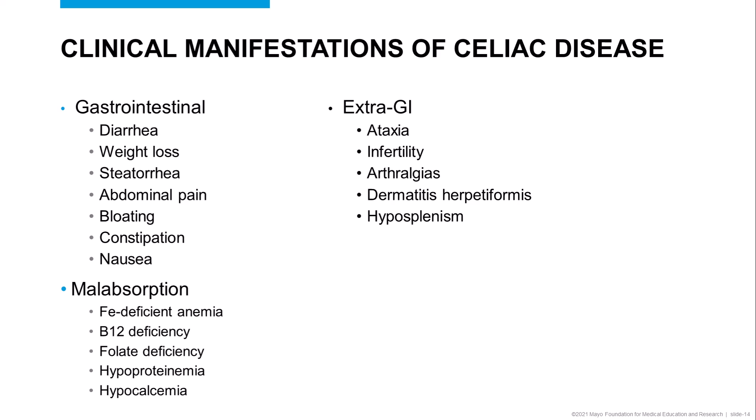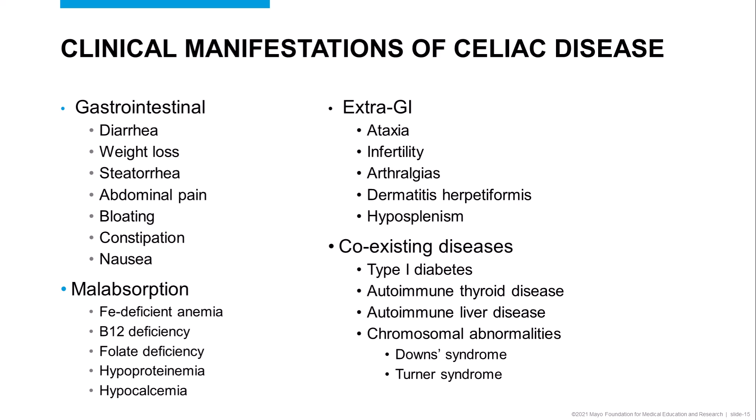Patients with celiac disease may show manifestations that appear to have little to do with the GI system. Reports in the literature have demonstrated associations between celiac disease and ataxia, infertility, arthralgia, dermatitis herpetiformis, and hyposplenism. Celiac disease has also been shown to occur more frequently in patients with other autoimmune diseases, such as type 1 diabetes, autoimmune thyroid disease, and autoimmune liver disease, and in patients with specific chromosomal abnormalities. The point to stress here is that there are a wide variety of clinical symptoms or other scenarios in which testing for celiac disease may be warranted.